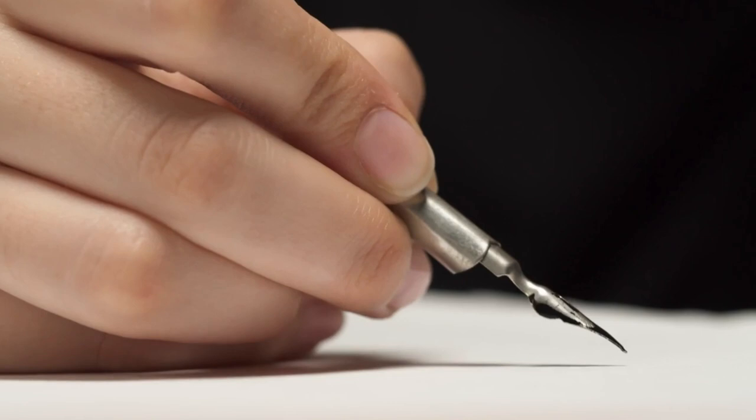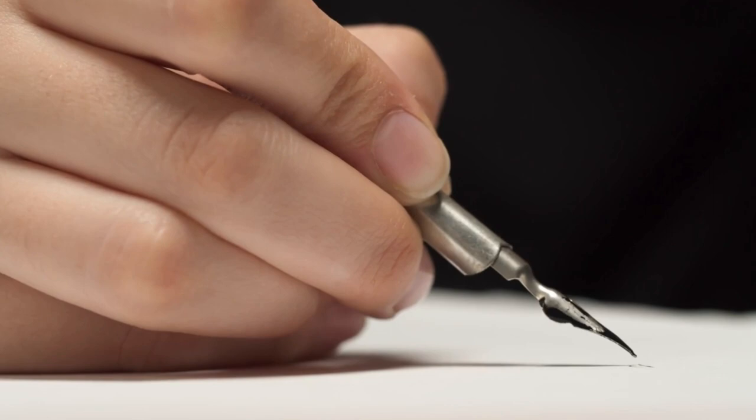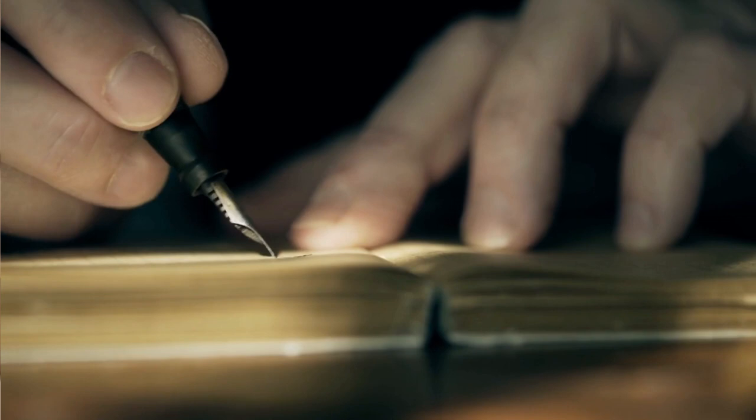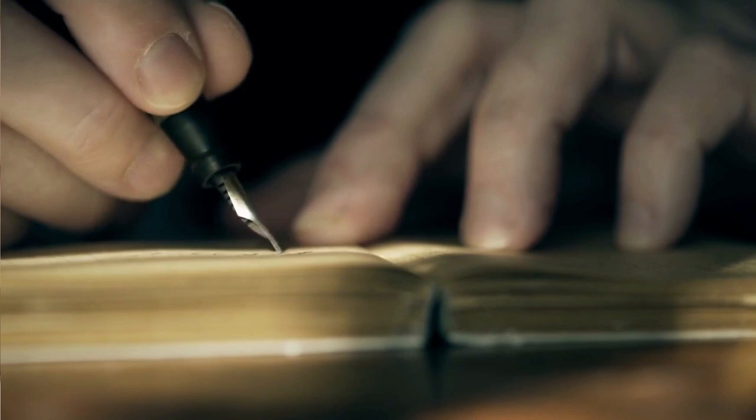The fountain pen worked by using gravity to feed the ink from a reservoir into the nib of the pen. The ink flowed from the reservoir through a small channel in the nib and onto the paper. The design of the fountain pen made it much more practical than earlier writing tools like the quill, and it soon became a popular tool for everyday writing and note-taking.